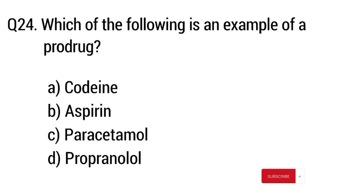Question number 24. Which of the following is an example of a prodrug? The right answer is option A: Codeine.